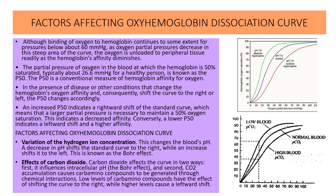The next factor is the effect of carbon dioxide. Carbon dioxide affects the curve in two ways: first, it influences intracellular pH — the Bohr effect — and second, carbon dioxide accumulation causes carbamiño groups to be generated through chemical interactions. Low levels of carbamiño compounds shift the curve towards the right, while higher levels cause a leftward shift. In the lower graph we can see that low blood partial pressure of CO2 shifts the curve to the left, whereas higher CO2 shifts it to the right.